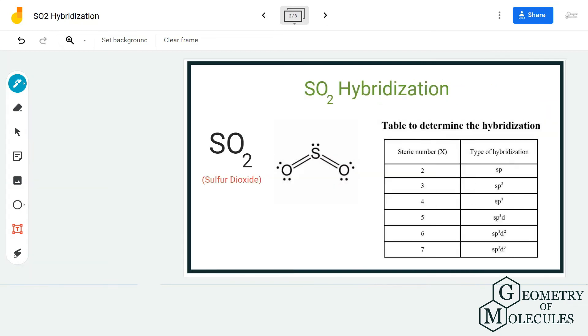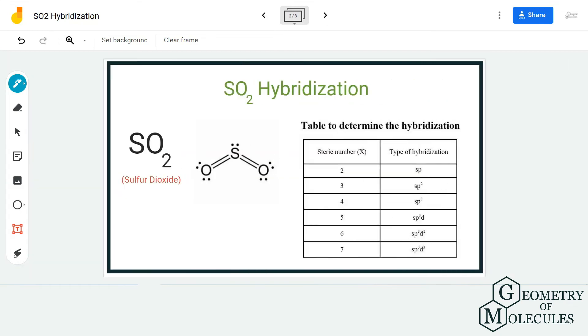The steric number is basically finding out the electron regions around the central atom. So here the electron regions will also be three for this, because there are two bonding pairs of electrons, which is for this oxygen and this oxygen, and one lone pair of electron.